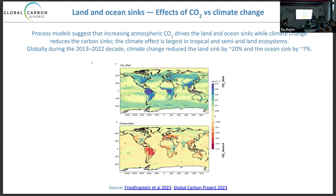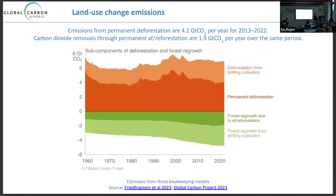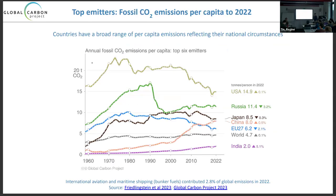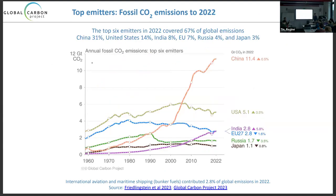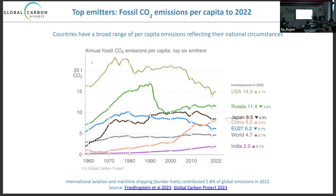On per capita emissions: these are production-based emissions, not consumption-based. They are not embedded emissions — it's production, not consumption. We do have consumption estimates in the paper, from 1990 onwards, and you can see various shifts. As mentioned, China and the EU basically line up when you account for trade.